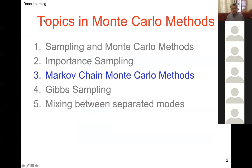This is the table of contents of Monte Carlo methods. Last week we studied sampling in Monte Carlo methods and a particular method called importance sampling. Today we begin with Markov Chain Monte Carlo methods, and if time permits, we do Gibbs sampling and mixing between separated modes.